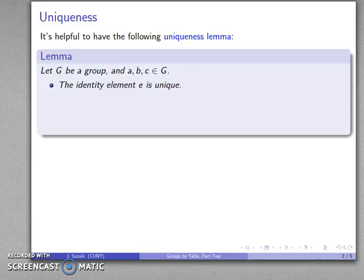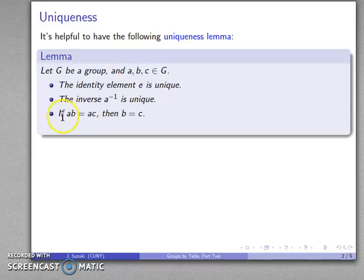Let G be a group with A, B, C elements in G. First of all, remember we've already proved the identity element E is unique. The inverse is also unique. If AB equals AC — if I have two products that are equal — then B is equal to C. That's sometimes referred to as left cancellation, because we're dropping this term on the left.